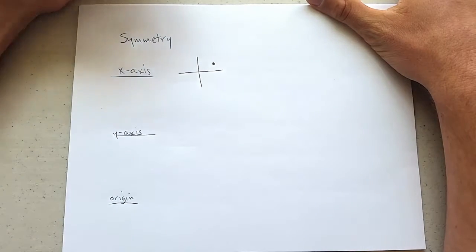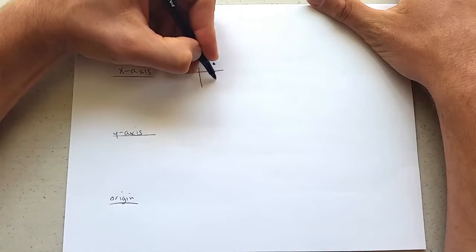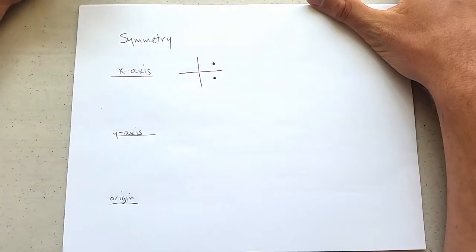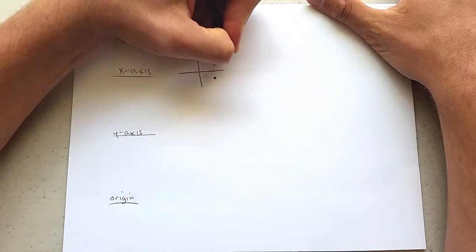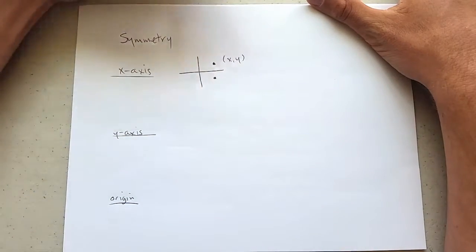How would this point have x-axis symmetry? Well, it means if we reflect or rotate around the x-axis halfway over to here, this point would have coordinates. They could be any numbers, but it's going to look like an x-coordinate and a y-coordinate.